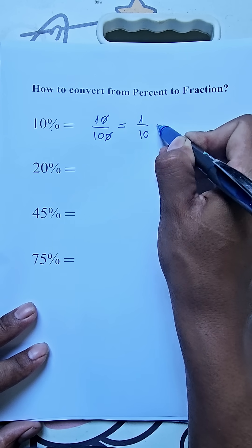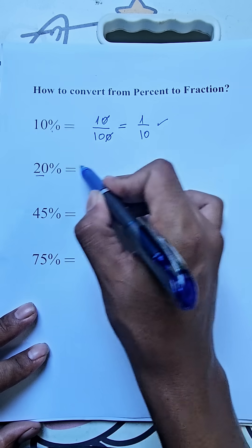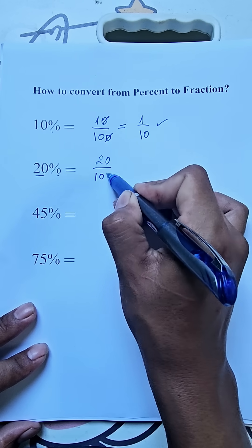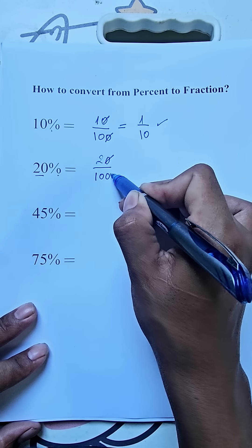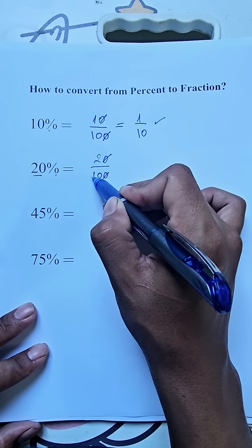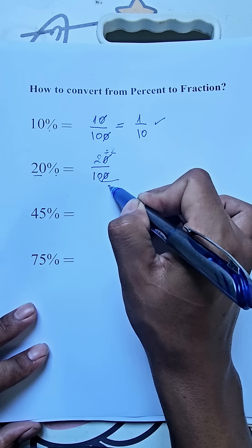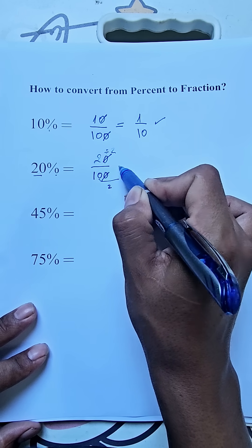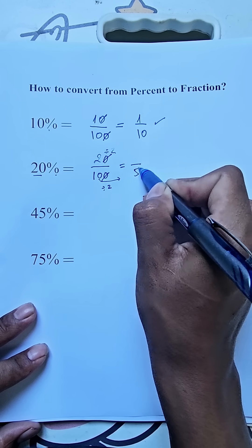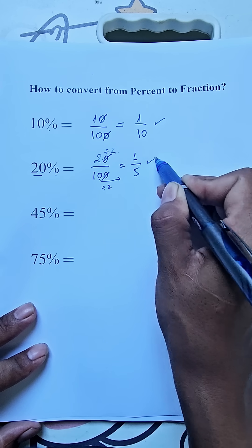20% is equal to 20 divided by 100. We simplify — canceling the zeros and dividing by 2 — so our answer is 1 divided by 5.